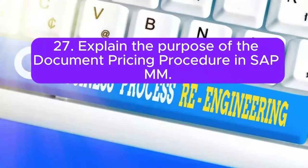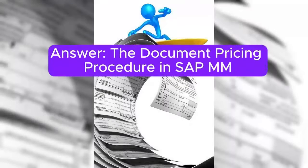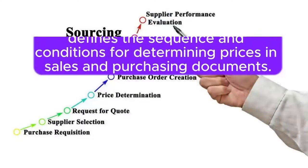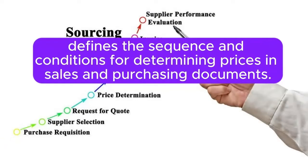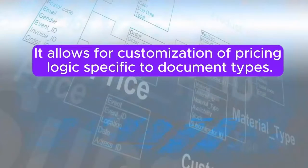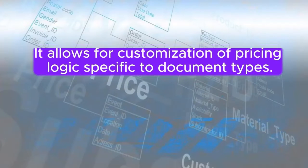Question 27: Explain the purpose of the document pricing procedure in SAP MM. Answer: The document pricing procedure in SAP MM defines the sequence and conditions for determining prices in sales and purchasing documents. It allows for customization of pricing logic specific to document types.